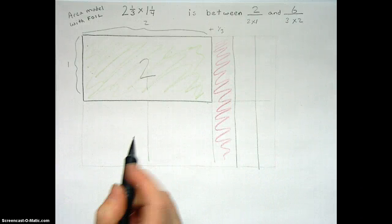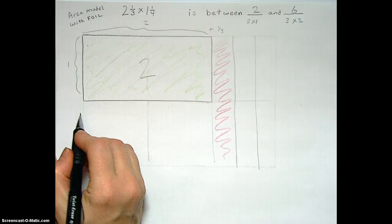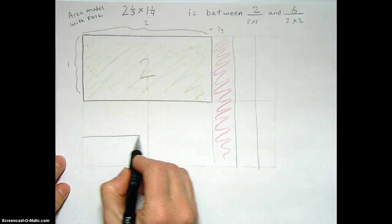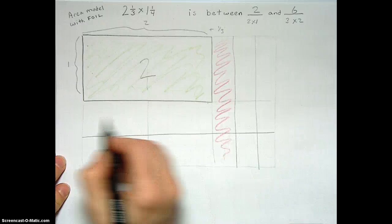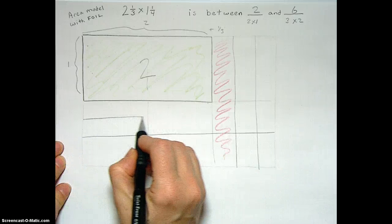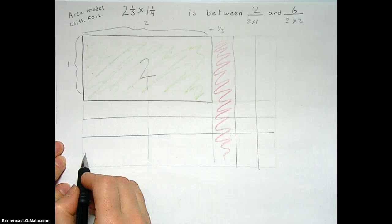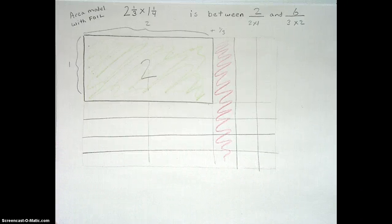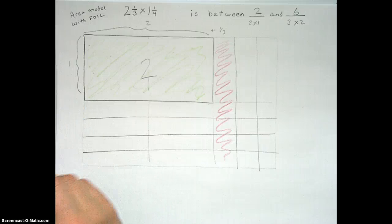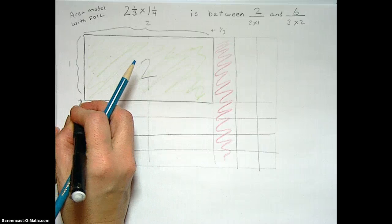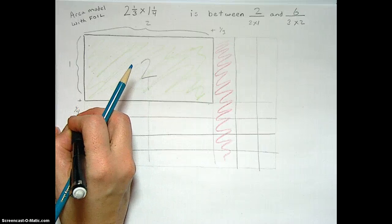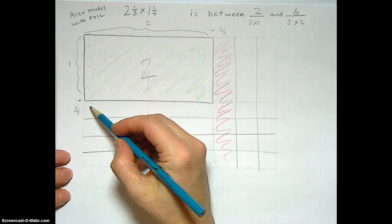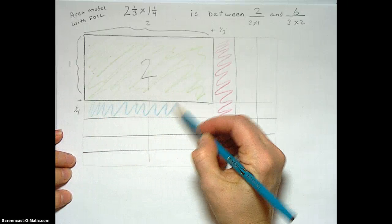And then we need this to be 1 and 1 quarter. So let's break this into quarters. When I do quarters, I like to do a half and then half each half. That looks close enough to quarters for all of us, right? So let's go ahead and have this be plus 1 quarter. This will be our quarter all the way across.